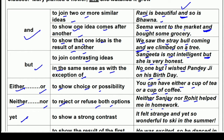Next, 'yet' is used to show a strong contrast. For example, 'it felt strange, and yet so wonderful to ski in the summer.' It feels very strange, but still, skiing in the summer is a lot of fun. 'Yet' is used when we want to express a strong contrast between two ideas.